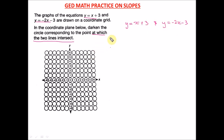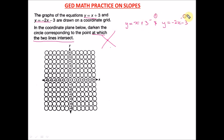To find where they intersect — the solution — since these are linear equations the lines will cross each other somewhere, and we need to find that point. The first thing we do is use the substitution method to find it. There are other methods like the graphical method, but substitution is fastest and saves time.